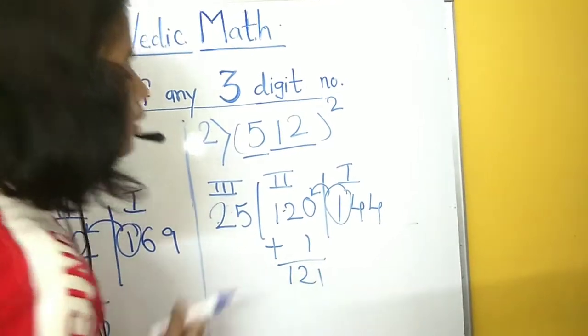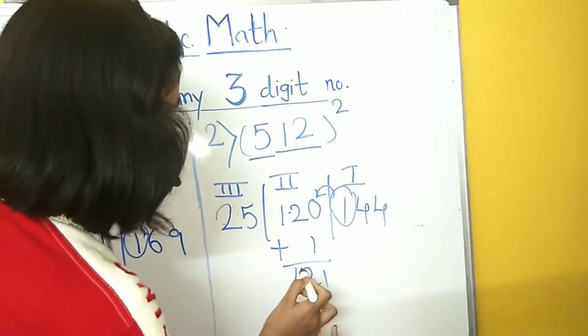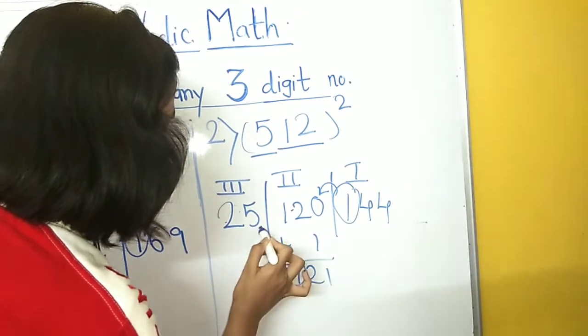Now, again, 121 is the three digit number. So, we will carry forward it again.